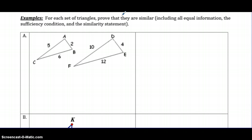So examples, for each set of triangles prove that they are similar, including all equal information, the sufficiency condition, and the similarity statement. So for these guys here, I don't know any of the angles. I always try to aim for the angles first because as long as we can prove two angles, we get it done nice and quick and we don't have to worry about setting up these fractions. But in this case, we don't have that.